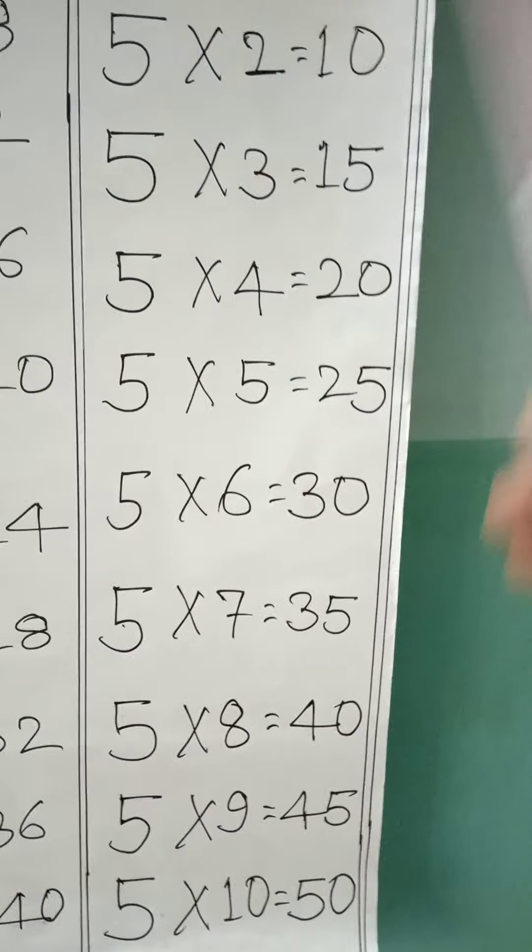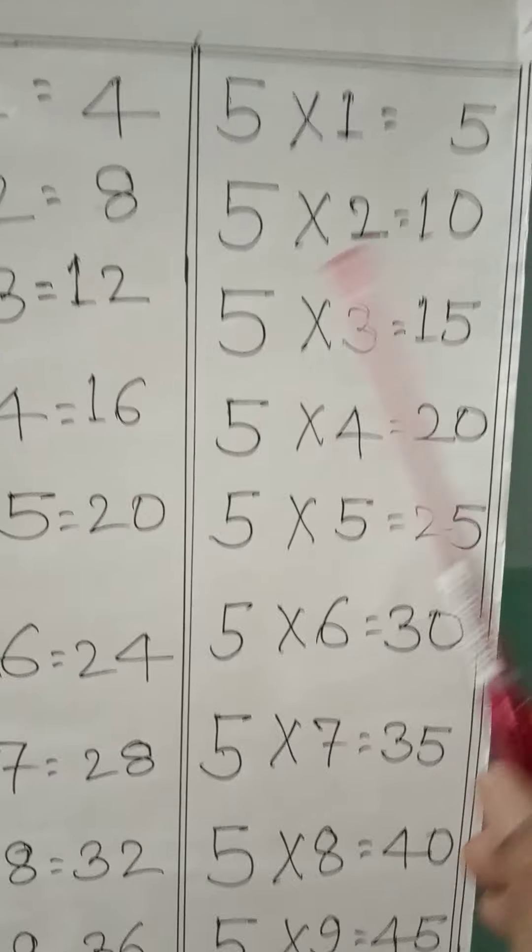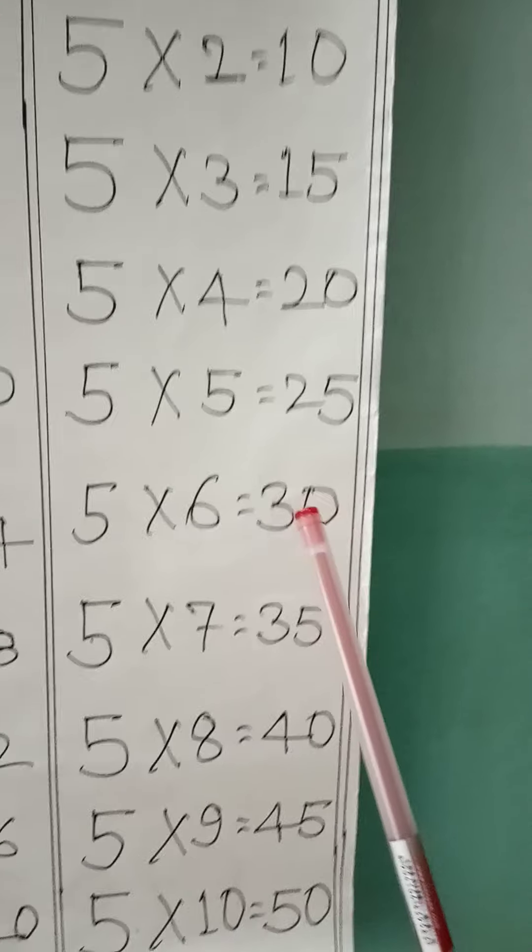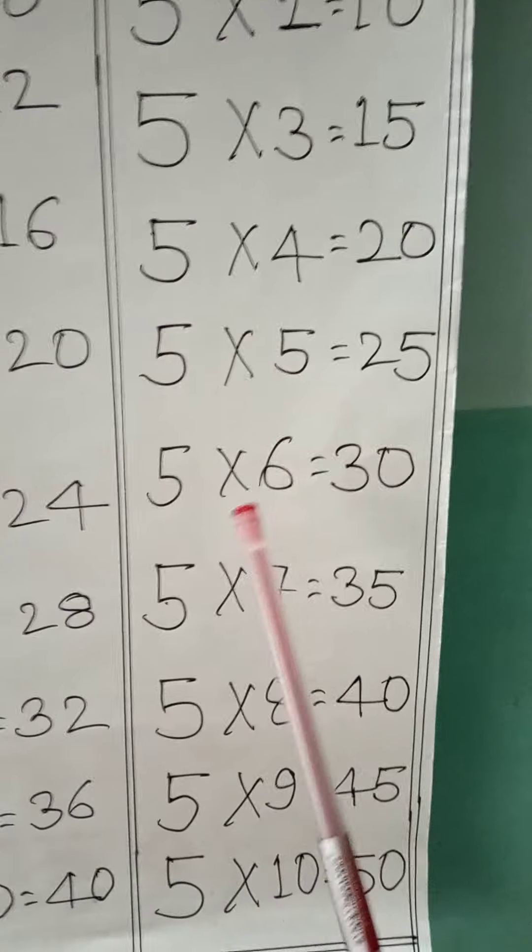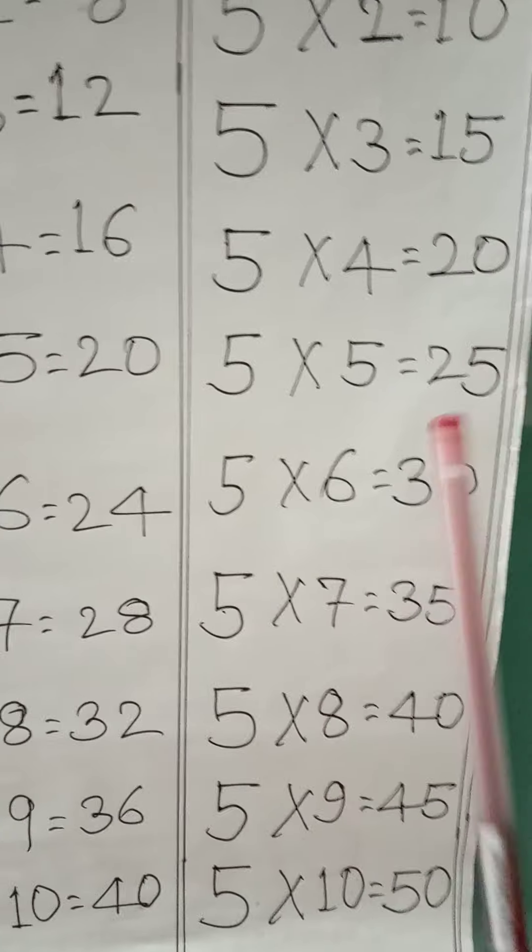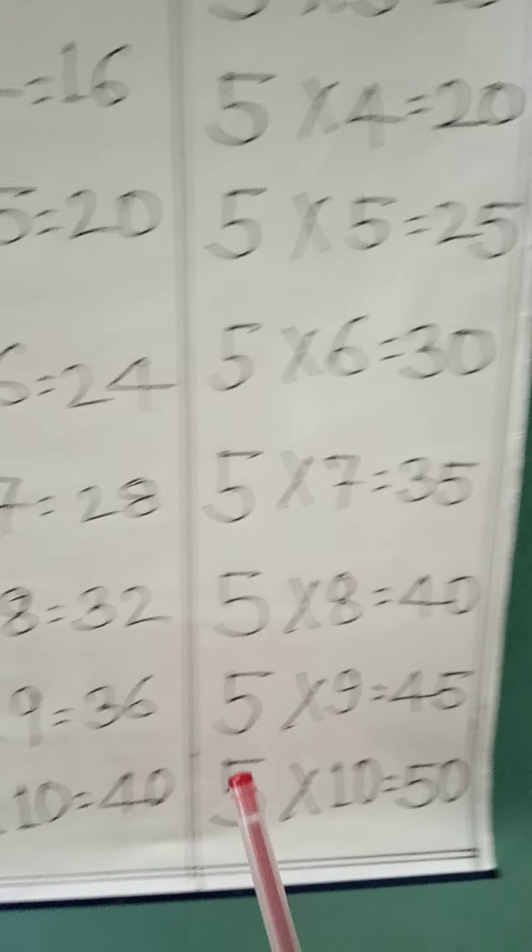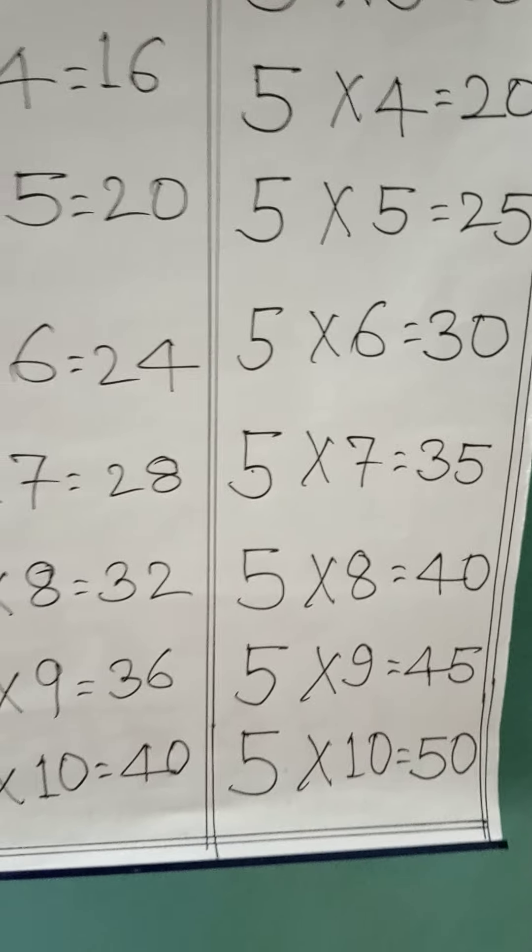5 × 1 = 5, 5 × 2 = 10, 5 × 3 = 15, 5 × 4 = 20, 5 × 5 = 25, 5 × 6 = 30, 5 × 7 = 35, 5 × 8 = 40, 5 × 9 = 45, 5 × 10 = 50.